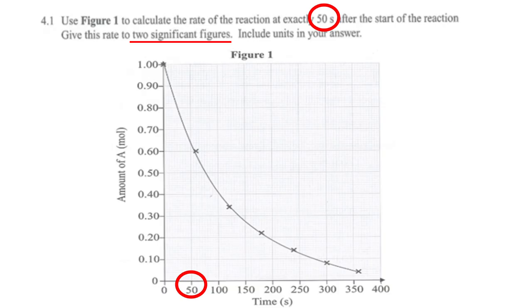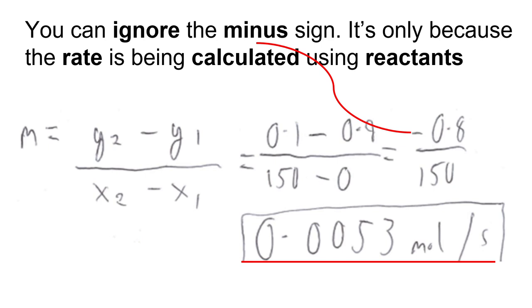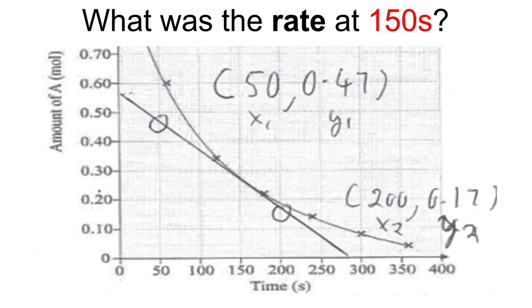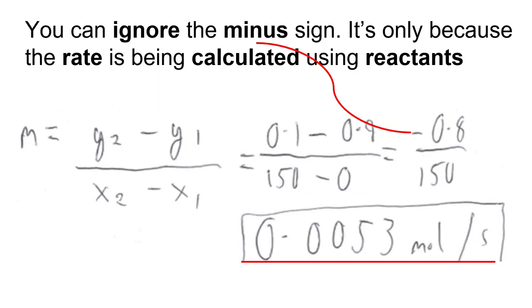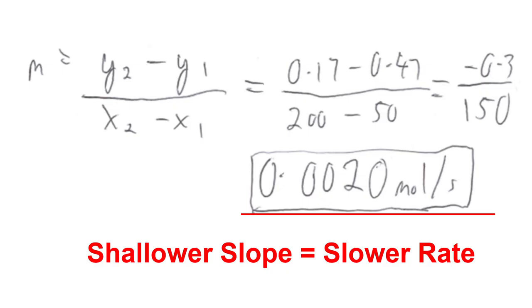For decreasing reactant graphs you use the same tangent method. Calculate the rate at 50 seconds to two significant figures: draw a tangent at the curve, pick easy X values such as 0 and 150, plug the numbers in. At 150 seconds the slope is shallower, giving a rate of 0.002 — less than half the rate at 50 seconds, because it's a shallower slope.